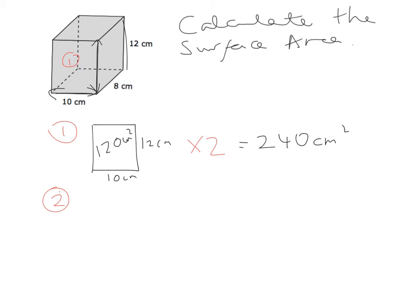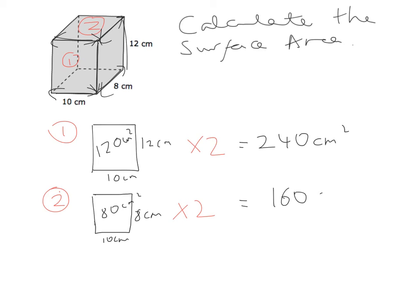Rectangle number 2 is the one on the top, which is the same as the one on the bottom. The length along the front is still 10 centimetres, and going back it relates to this distance, which is 8 centimetres. So 10 times 8 gives 80 centimetres squared — times by 2 gives 160 centimetres squared.